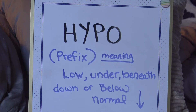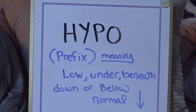Hypo is a prefix — it's the beginning of a word. The meaning is low, below, under, beneath, down, or below normal.